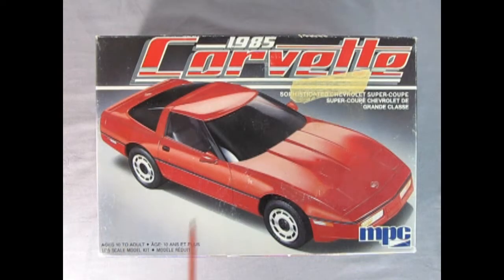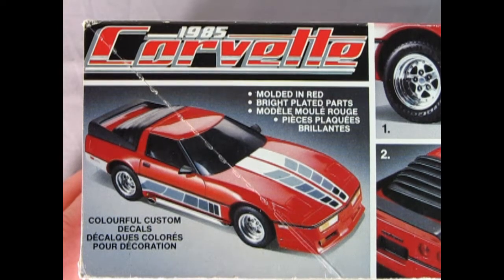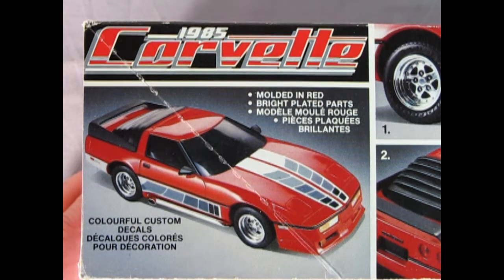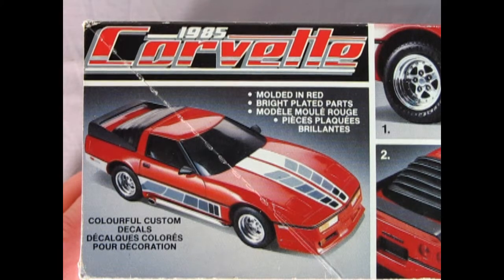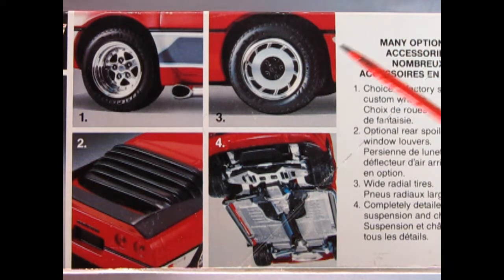We also got this amazing 1985 Chevrolet Corvette, a sophisticated Chevrolet Super Coupe by MPC. For ages 10 to adult, it's a 125th scale model kit. As we look on the side of the box, we see that they have both English and French. Our model kit is molded in red with bright plated parts and colorful custom decals.